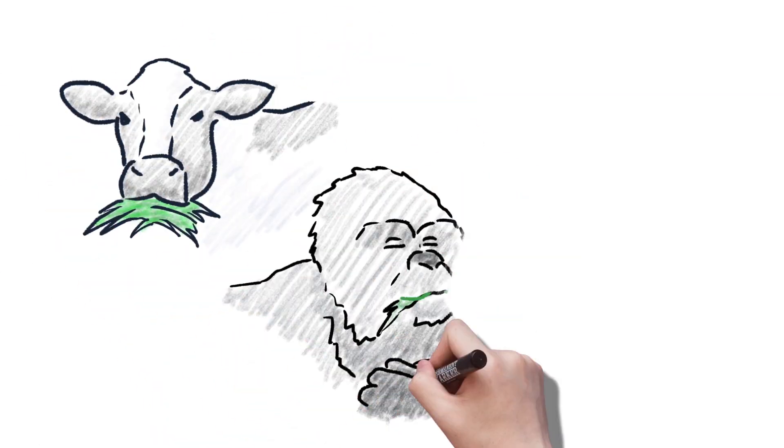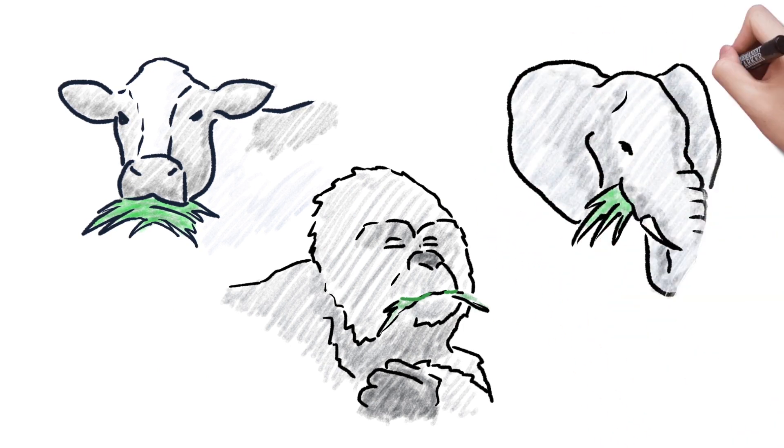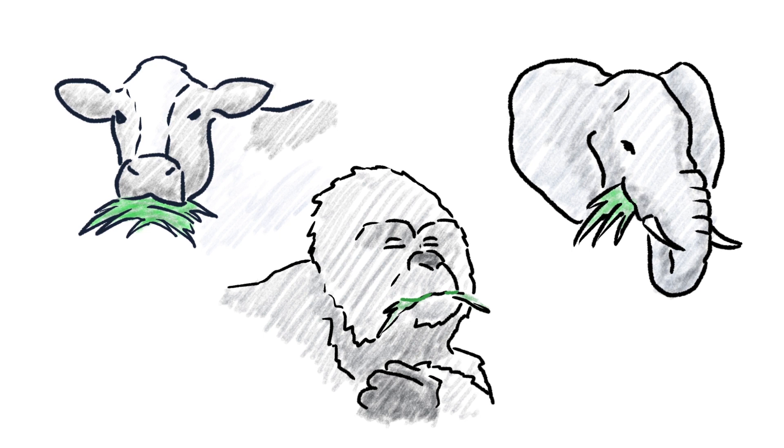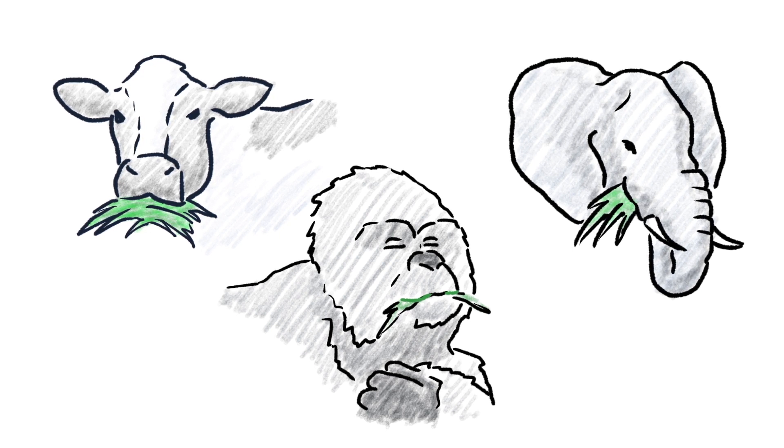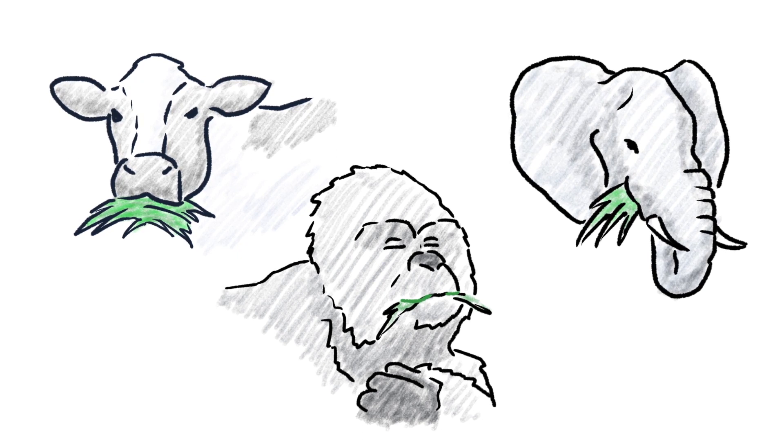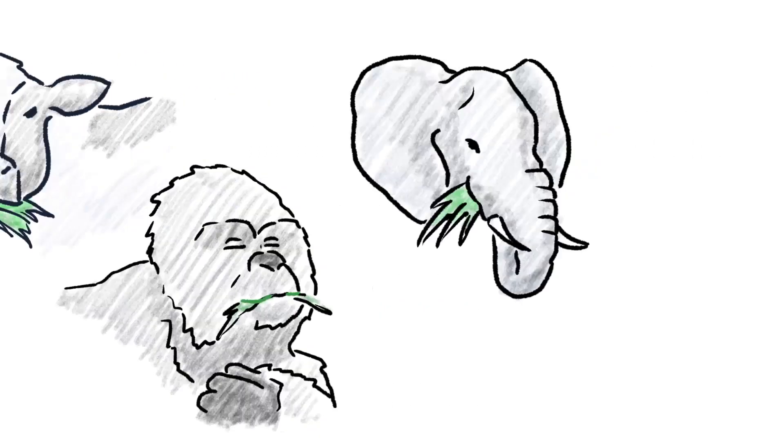Think of it this way. Large grazing animals like cows, gorillas, and elephants are all herbivores. Meaning, they eat only plants. Yet, they are not lacking in muscle mass. Instead, they're able to grow big and strong just by eating plants. And so will you.